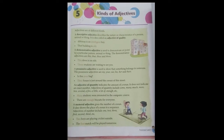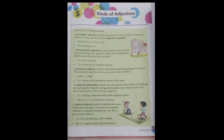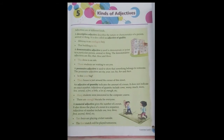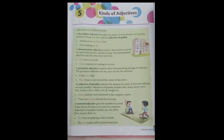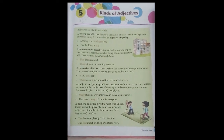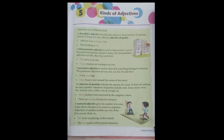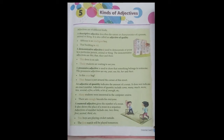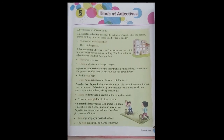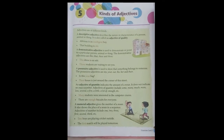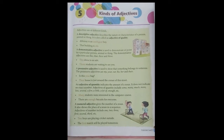A descriptive adjective describes the nature or characteristics of a person, animals or thing. This provides information or attribution to the noun or pronoun. They modify or describe the noun or pronoun. It also describes the quality of a noun or pronoun, thus it is also termed as an adjective of quality. For example: Abhine is an intelligent boy. The adjective 'intelligent' is describing the word 'Abhine', which is a noun.